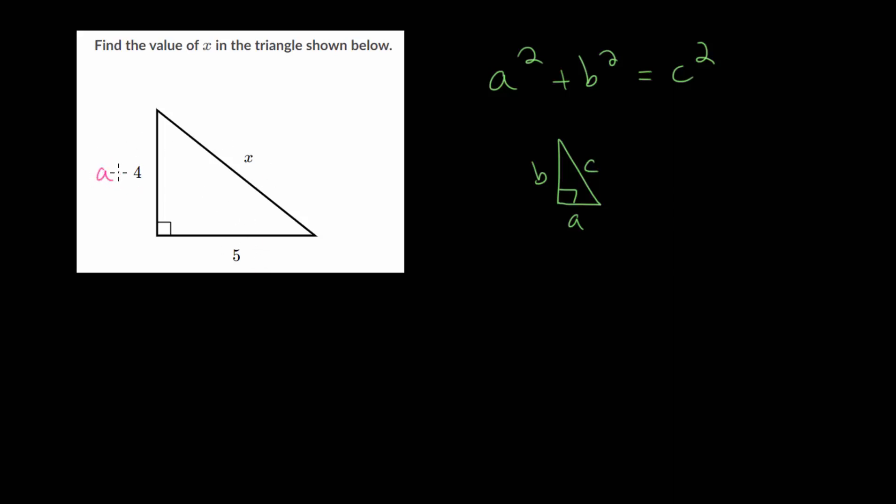So let's just call this a, and we can call this one b. Though if we want to switch it, that's fine. And the important thing to remember is that the side opposite the right angle, that is what we have to call c, since that's the hypotenuse of our right triangle.